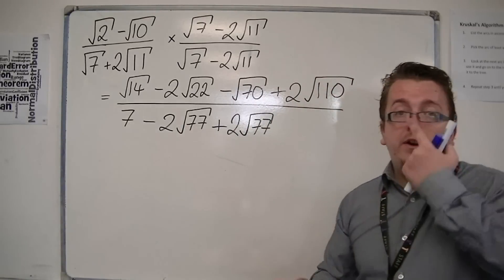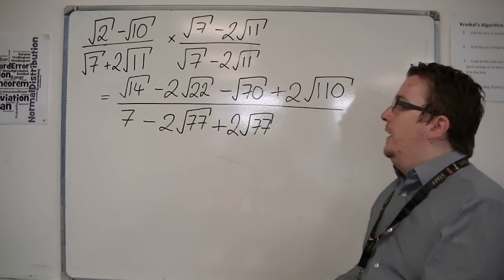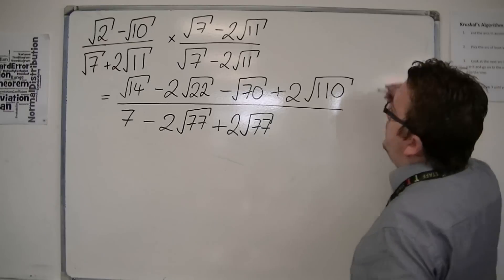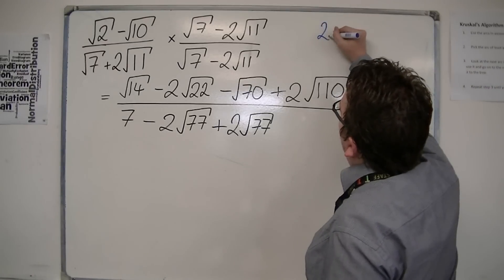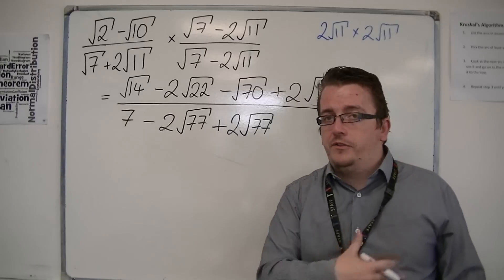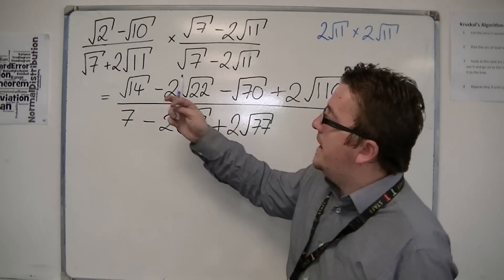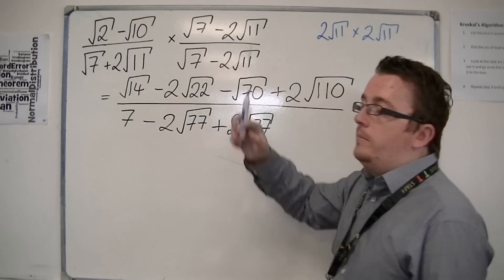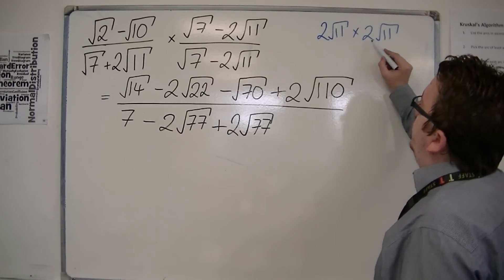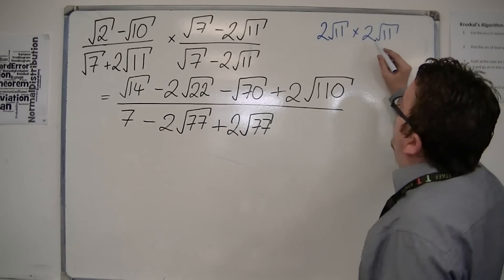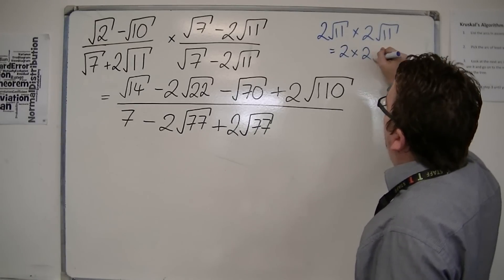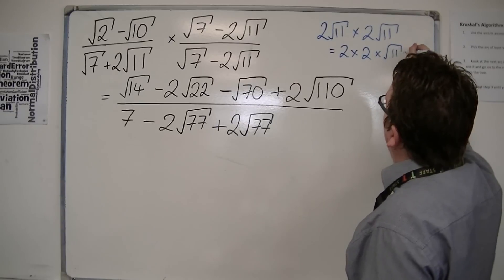Now, when it gets down to the style of multiplying surds, there's often a little bit of confusion and mistakes are easily made. So you have 2 root 11 times, effectively, 2 root 11. We'll deal with the pluses and minuses afterwards, because I know it's going to be a negative, because you've got a plus times a minus. So you've got 2 times root 11 times 2 times root 11. So if you reorder these, it becomes 2 times 2 times root 11 times root 11.